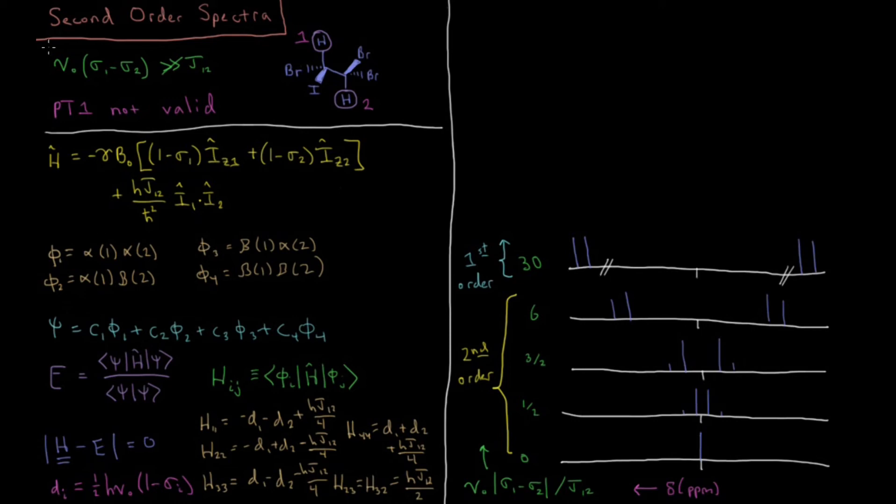So the energies of phi 1 and phi 4 those are going to remain the same but we're going to get some strange business in terms of the coupling between phi 2 and phi 3. So our final energy levels are going to end up coming out to being the following. So we're going to have E1 equals minus H nu naught times 1 minus sigma 1 plus sigma 2 over 2, that's the value of it without any coupling plus the coupling which gives us HJ12 over 4, so that's unchanged that's the same as it was in a first order spectrum. We have E4 which is also going to be the same and this is going to be positive H nu naught times 1 minus sigma 1 plus sigma 2 over 2, that also gets shifted up due to the coupling HJ12 over 4.